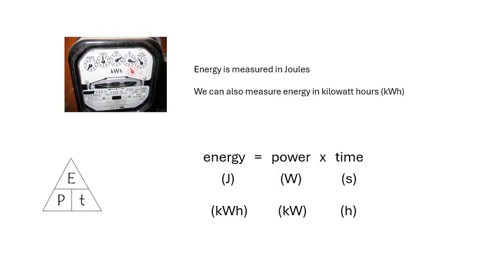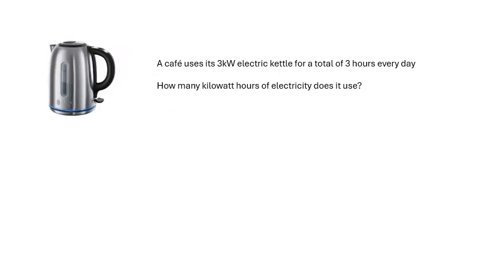Kilowatt hours is kilowatts times hours. So how many kilowatt hours something uses up depends on its power in kilowatts and how long you use it in hours. Have a go at this one. Pen, paper, calculator. And there you go. Kilowatt hours, kilowatts times hours. So 3 kilowatts for 3 hours, 9 kilowatt hours. And if it was 10 pence a kilowatt hour, that would be 90 pence for using that kettle.